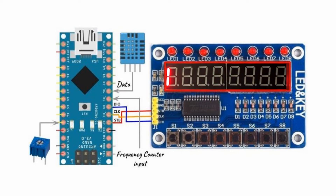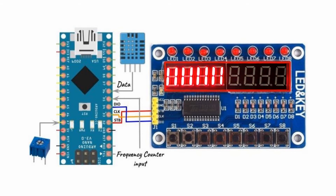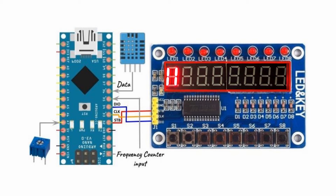Pressing S3 will give us the 16-level bar graph display, and we can change the value of the bar graph by changing the potentiometer value. Pressing S3 again will take us back to the main menu.